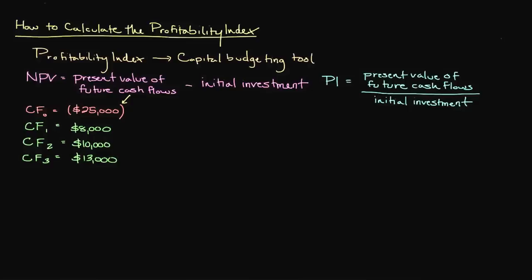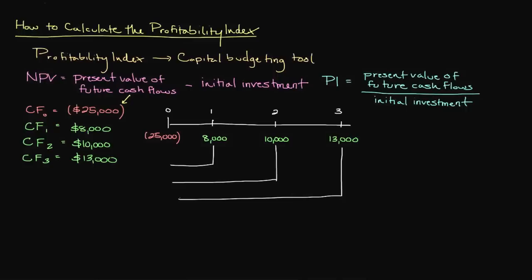If you've seen any of my prior videos on capital budgeting tools, you know that I prefer to display the process of discounting as follows. Although this isn't absolutely necessary, I find that it helps me to stay organized and provide a clearer picture of what is actually going on in the problem. When discounting future cash flows, you can utilize a financial calculator, Microsoft Excel, or even the present value formula which is PV equals FV divided by 1 plus I to the nth power.